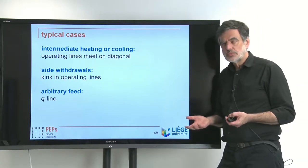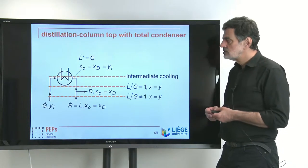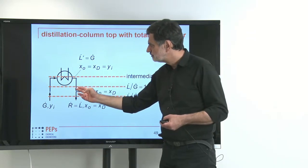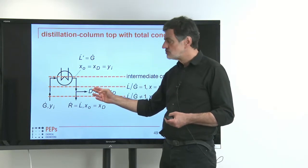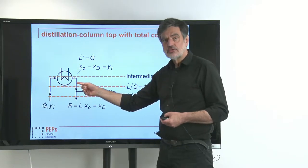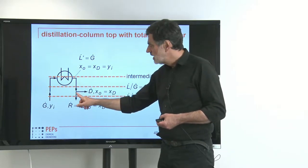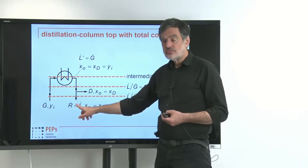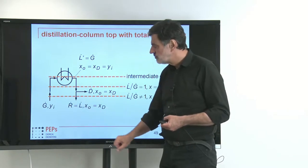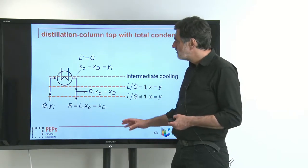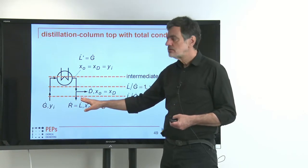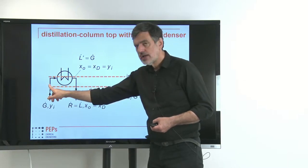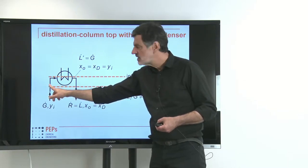Let's start with a typical condenser. We have our Ġ stream with its composition — it is totally condensed. Part of that is withdrawn: we withdraw our distillate side stream as a liquid at boiling point, and feed the remainder — our reflux — back into the column. That reflux then creates the L̇. The compositions up here will all be identical; they will all be x_D, which means also that this x and that y are identical, meaning we have a point on the diagonal.